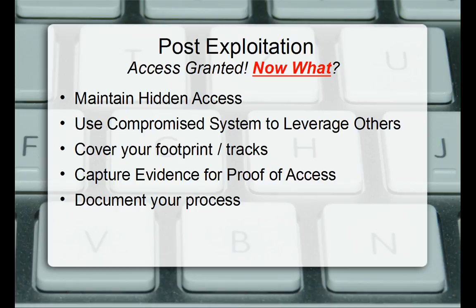Post-exploitation: access granted — now what? First, we want to maintain hidden access. We don't want anyone to know we're in, because they could just kill our process or meterpreter shell. We'll go through maintaining access, privilege escalation, dumping password hashes for both Windows and Unix, keeping persistent connections, migrating processes from the exploit to something like Notepad and then to a system-level process. We're going to set up pivoting — using compromised systems to proxy all our requests and attacks into the internal network, with feedback back through that host to us.